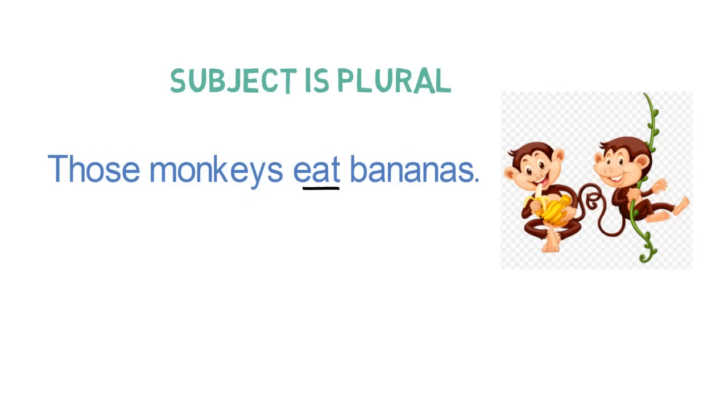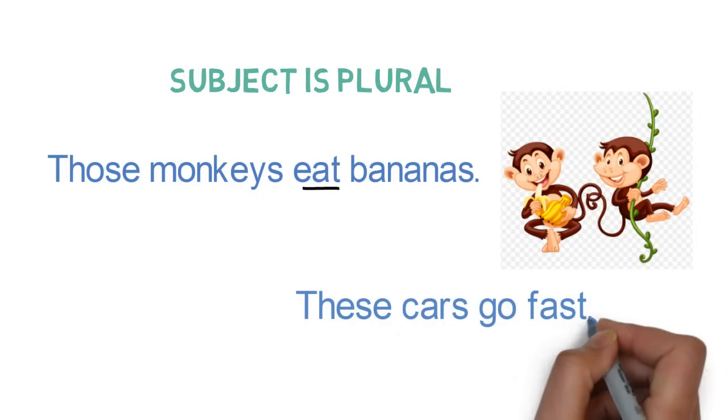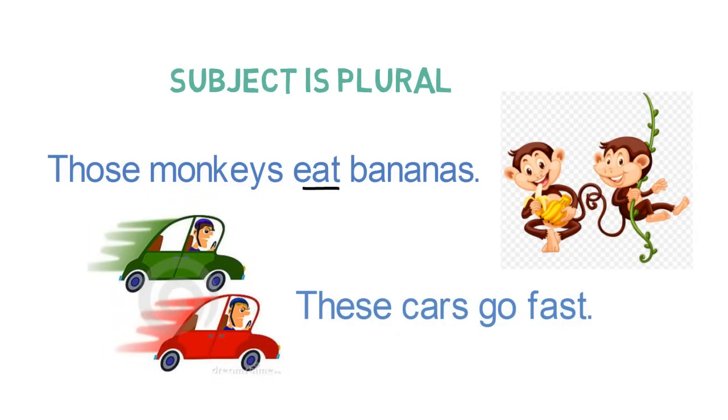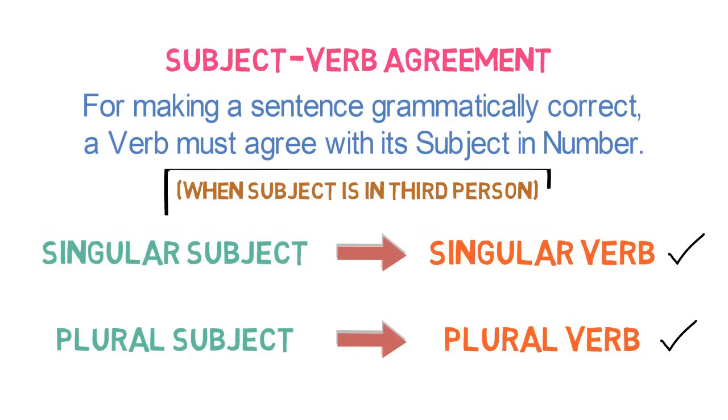Let's look into the next example. These cars go fast. Here, the subject is cars, which is plural in form. So, verb will also be plural in form. So, please remember this rule. The rule is that singular subject has singular verb and plural subject has plural verb. Please note, we have seen examples only where third person is used.